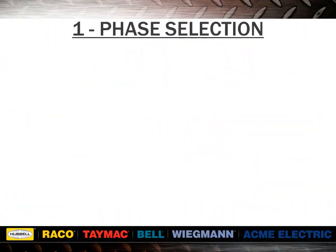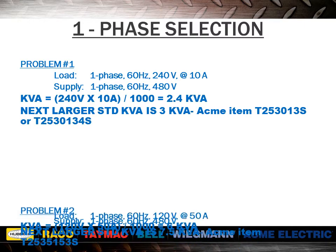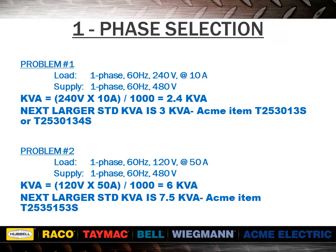Here we have some examples to show how to make single-phase selections. In problem one, the kVA equals 240 volts multiplied by 10 amps divided by 1,000, giving us a 2.4 kVA requirement. This would be supported by our standard 3 kVA transformer, item number T253013S or T2530134S. In problem two, the kVA equals 120 volts multiplied by 50 amps divided by 1,000, giving us a 6 kVA requirement. This would be supported by our standard 7.5 kVA transformer, item number T2535153S.